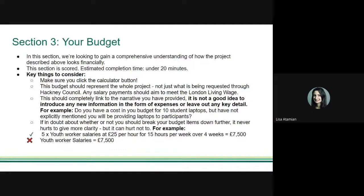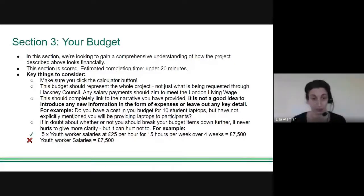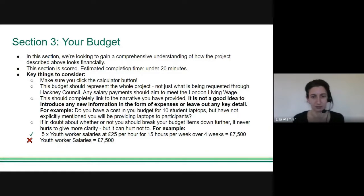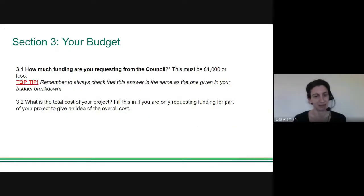Section three is about your budget — this is a scored section. There are calculator buttons on the page to help ensure your budget breakdowns are correct. Make sure your budget breakdown makes sense in conjunction with the rest of your application. If you mention items in your budget that aren't discussed elsewhere, assessors will be confused. Also, make sure your numbers add up — we receive many applications where the amount asked for differs from the budget breakdown.